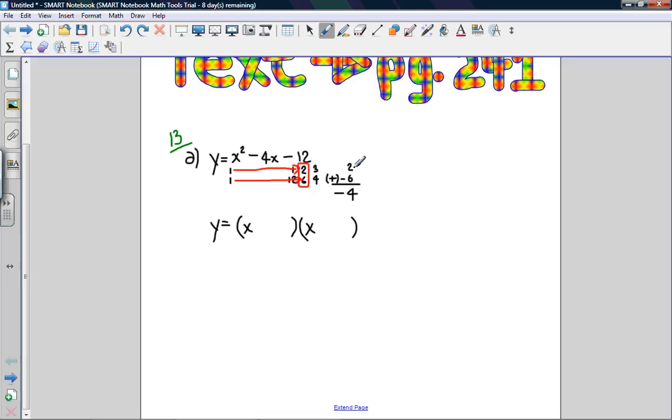I then switch the numbers, so the 2 goes to the second bracket with a positive. I put the 6 in the first one, and since there's a negative in front of it, I put negative 6. This is the final answer.